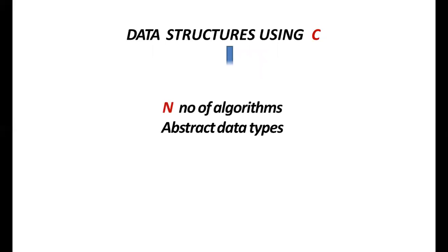Now we are going to discuss about data structures through C language. We are implementing the data structures using the syntax of C or C++ language. To structure the data, a number of algorithms are processed, and all these algorithms are called as abstract data types. My question would be: what is an abstract data type?